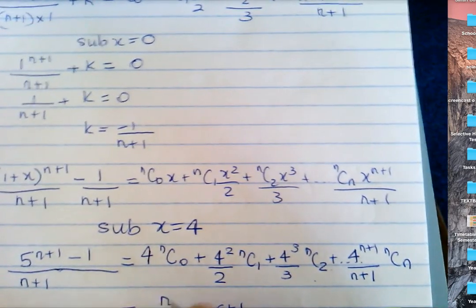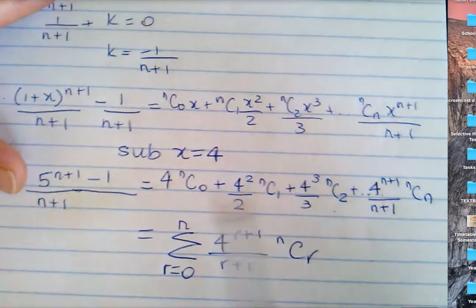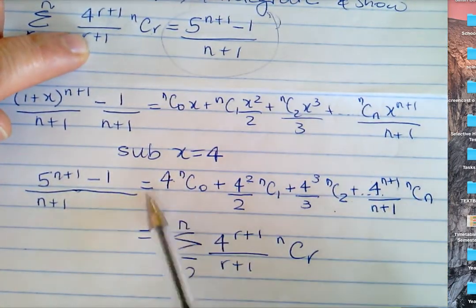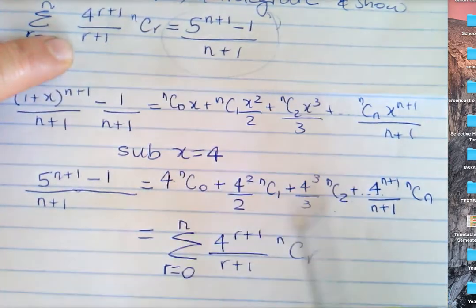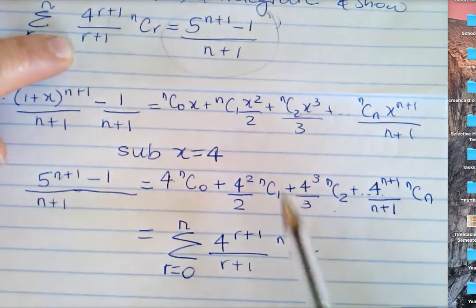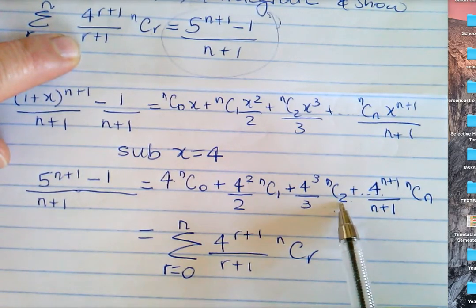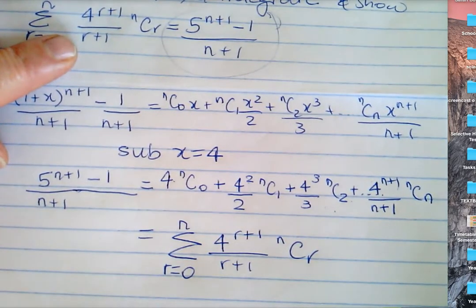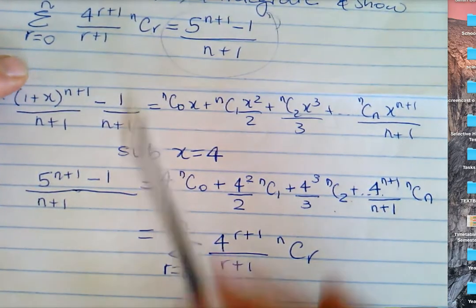So summing from r is zero to n, this is nCr times 4 to the r plus one over r plus one, which is what they've asked to prove. Once you've got your series, look at what they're trying to get you to prove and see if your series follows that result. For example, when r is one, you get 1 plus 1 equals 2, and for r is two, you get 2 plus 1 equals 3. It looks correct. So that series matches, starting from r is zero through to r is n.